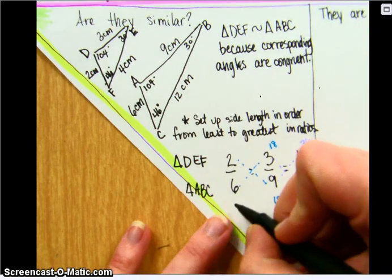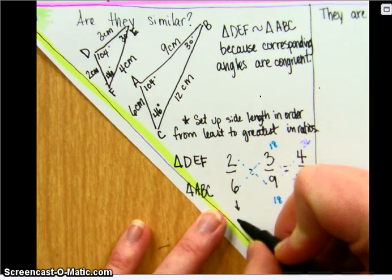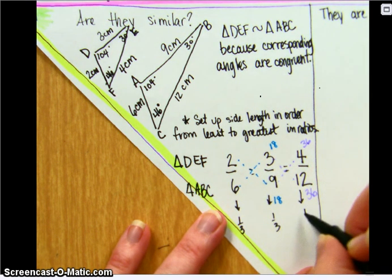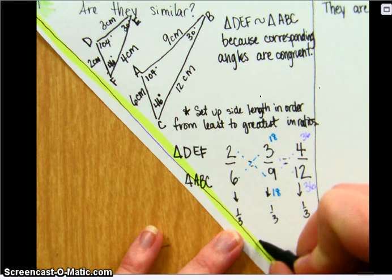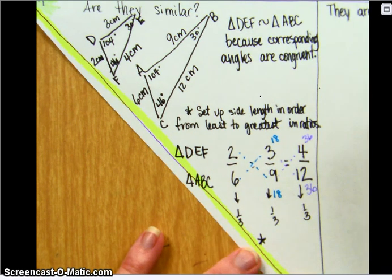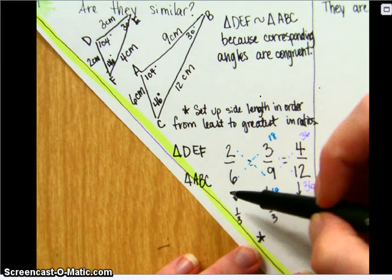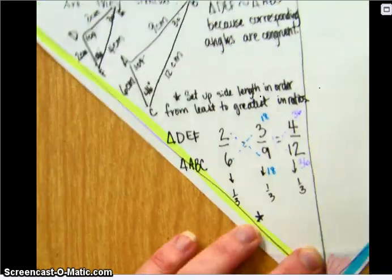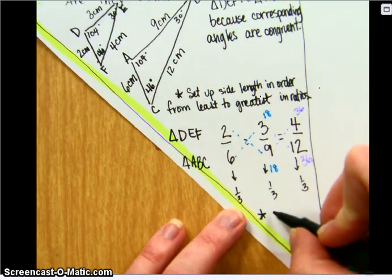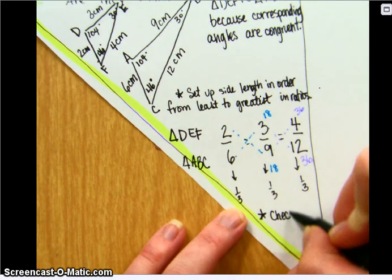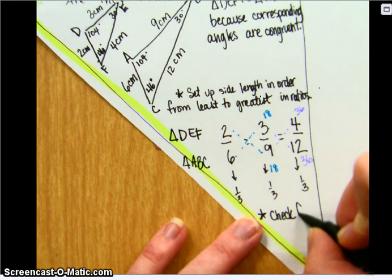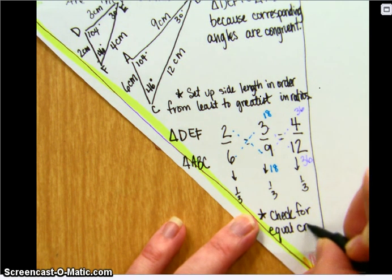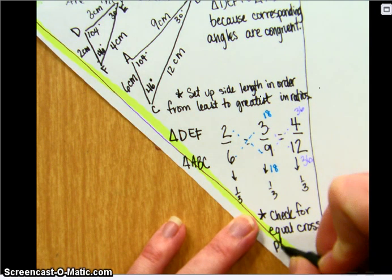Or you could say, if I simplify this to 1 third, this simplifies to 1 third, this simplifies to 1 third. And it is similar figures because all of these ratios simplify to the same unit rate. So we can check our side lengths for equal cross products or unit rate.